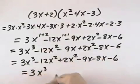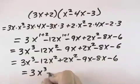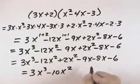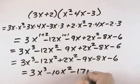Combining like terms gives us 3x cubed. Negative 12 plus 2 is minus 10x squared. Negative 9 and negative 8 is minus 17x minus 6.